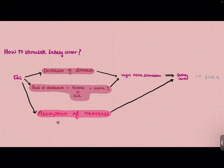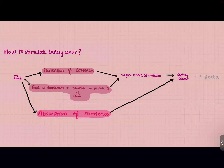The last way is through the absorption of nutrients. When we eat, we absorb nutrients — fatty acids, amino acids, and carbohydrates — which go through the intestines into our blood. When their levels are elevated in our blood, they get detected by the satiety center, and once the satiety center is stimulated, we don't eat anymore. These are the three different ways we can stimulate the satiety center.